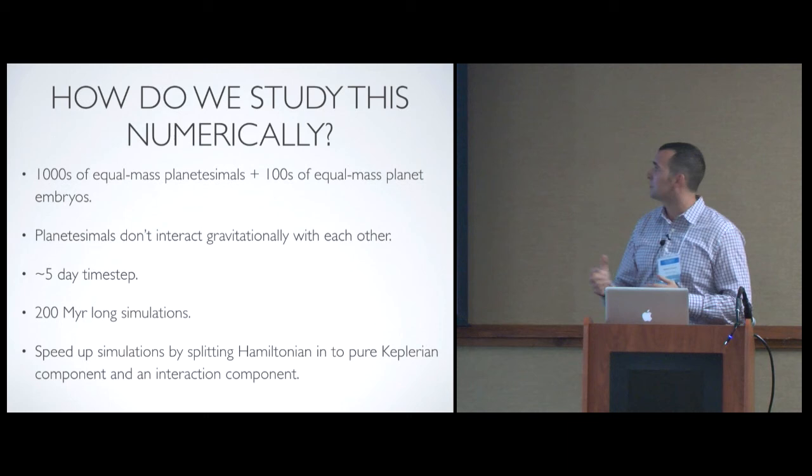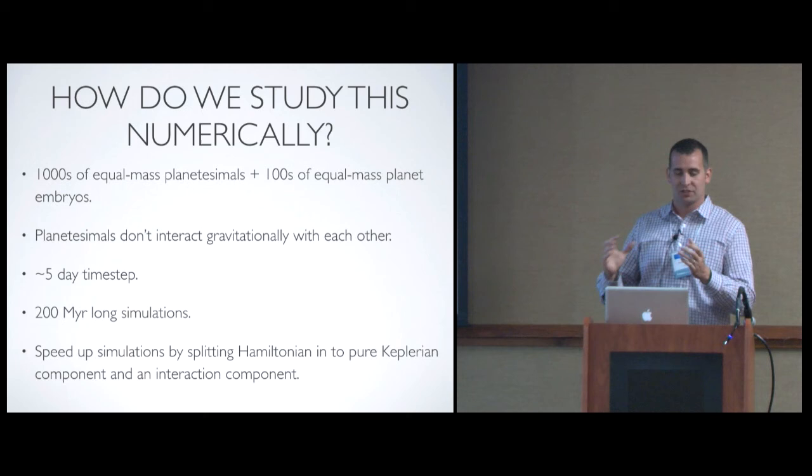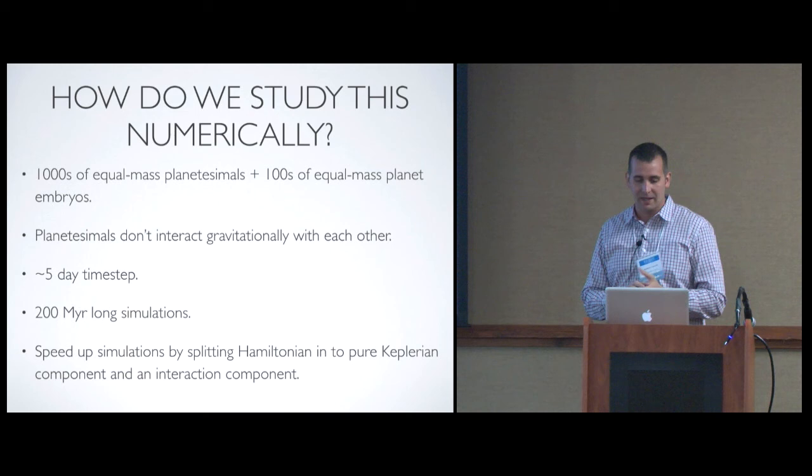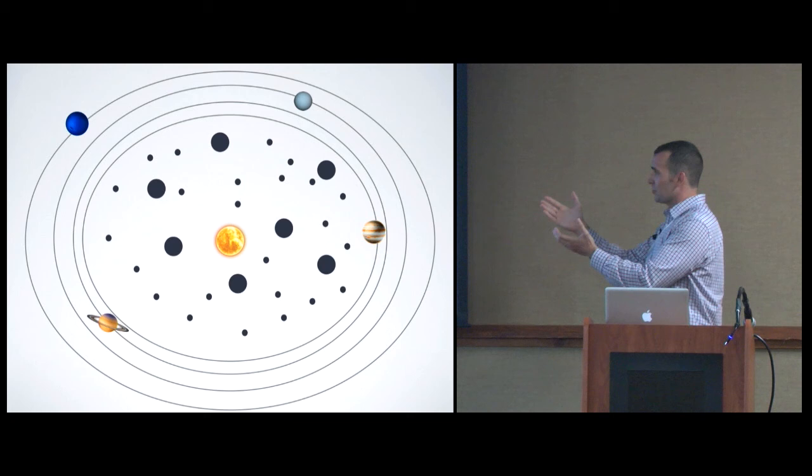We use these N-body integrators that are able to speed up these integrations by basically, you do a half time step where you just assume everything goes perfectly on its Keplerian arc, and then you apply all the perturbative kicks the second half time step.